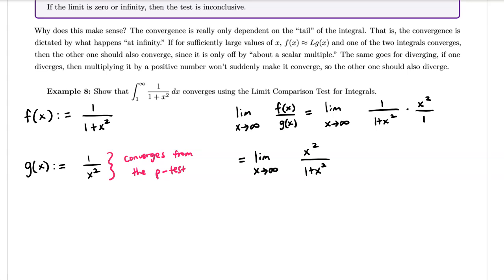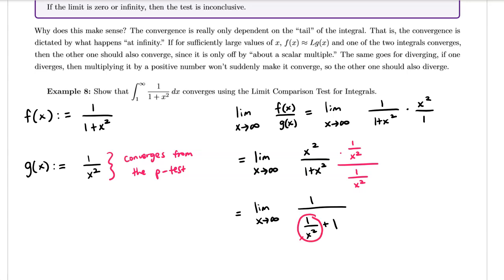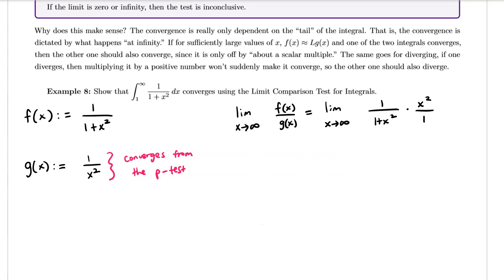We multiply both the numerator and the denominator by 1/x², essentially dividing every term by x². As x approaches infinity, the 1/x² term approaches 0, so we get 1 over (0 + 1), which equals 1. We've shown that this limit equals 1, which is a positive finite number.